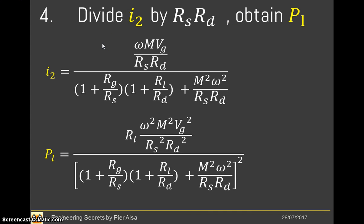Next step. Then we will express i2 in a more convenient way. So we will divide i2 by the same quantity, that is Rs Rd. And we will recognize this ratio Rg Rs and the other ratio Rl Rd. Now we can express PL, that is the power consumed by the load, with this expression. Because, as you remember, PL is given by the square of i2 multiplied by RL.